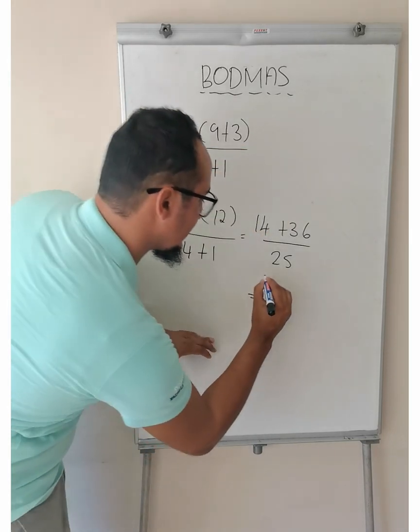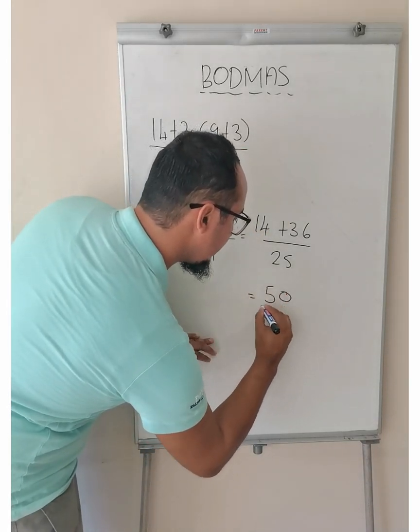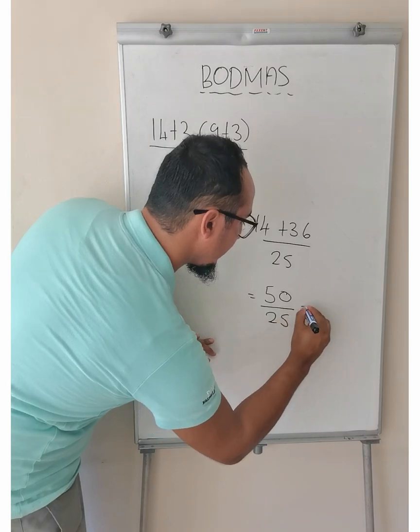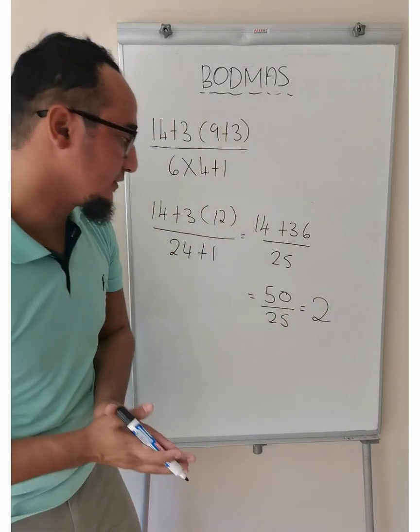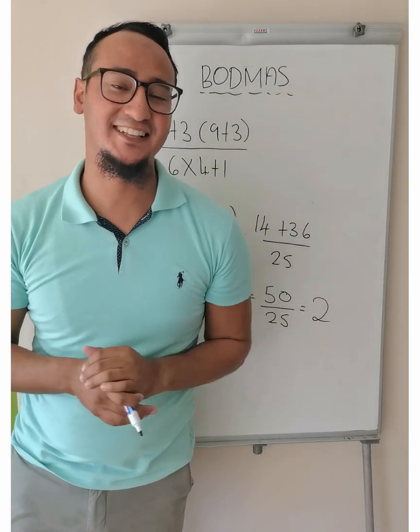24 plus 36 is equal to 50. Divided by 25. 25 and the answer is equal to 2. I hope you got that same answer.